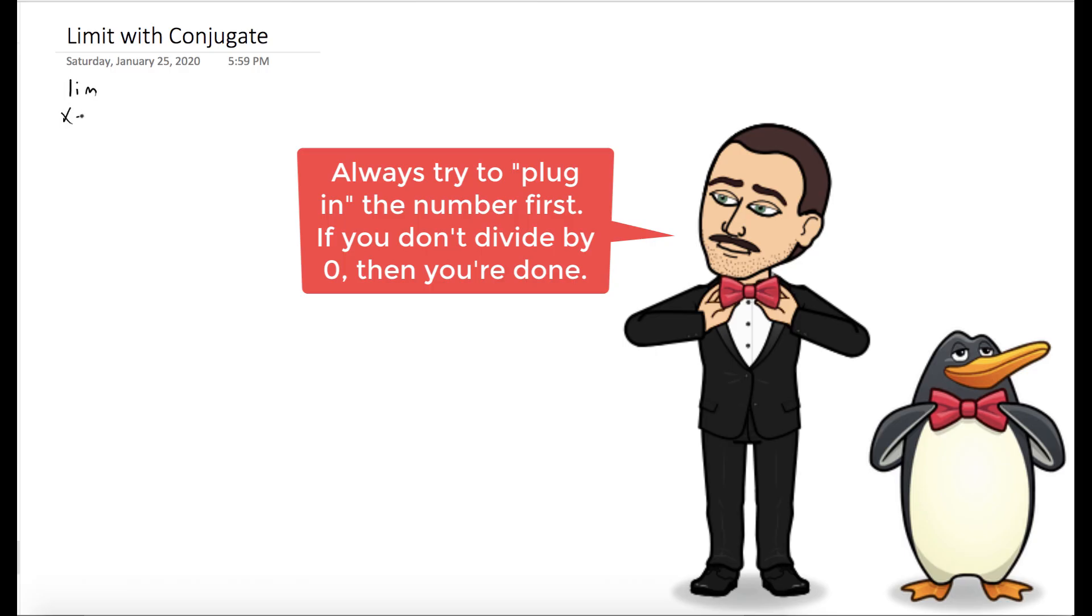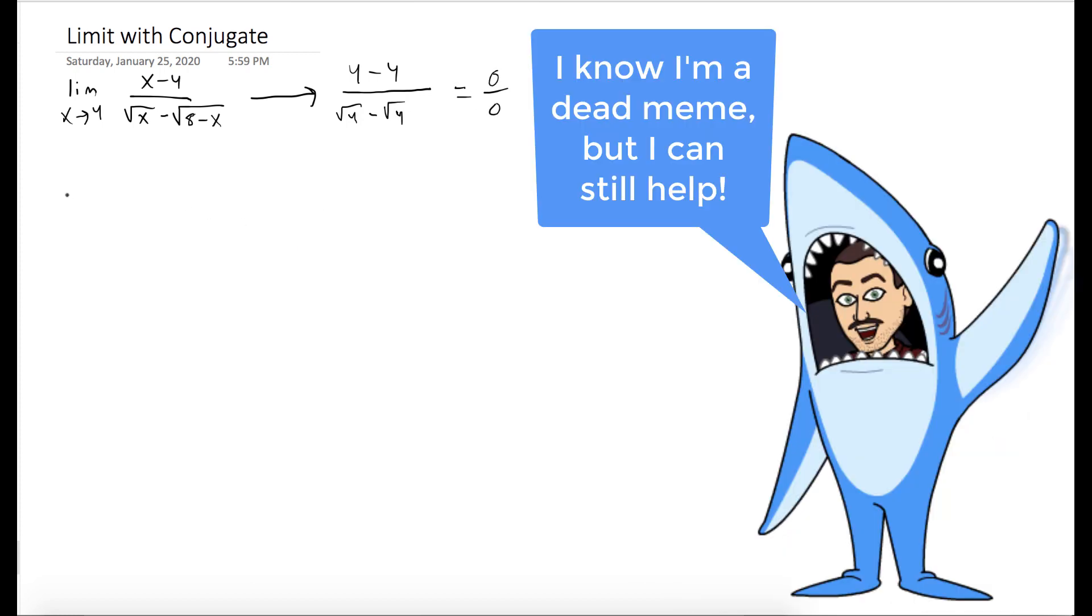So we want to evaluate the limit as x goes to 4 of x minus 4 over the square root of x minus the square root of 8 minus x. And what we could do is just try to plug in x equals 4 and see what happens. Unfortunately, when we do that, we get 0 over 0, which means we actually have to do some math for this problem.